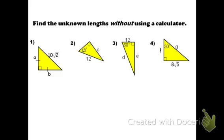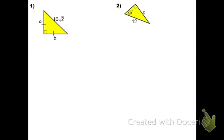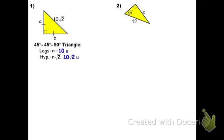Looking at the first one, all I see is the 90-degree mark — no other angles marked. However, I see tick marks where a and b are, which tells me this is an isosceles right triangle, or a 45-45-90 triangle. The legs are n, hypotenuse is n root 2. Substituting the given hypotenuse of 10 root 2: dividing by root 2 on both sides, they cancel, so the legs are 10 units — meaning a and b are both 10 units.